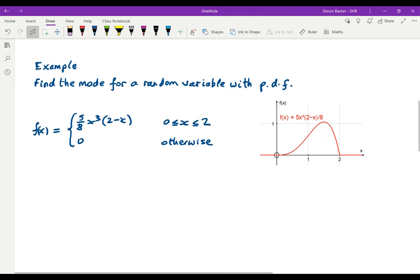Here is a probability density function for a continuous random variable. If we're looking for the mode, we're looking for the highest point on the graph, the most popular point. In this case, looking at the graph, we're looking for the maximum, the local maximum.